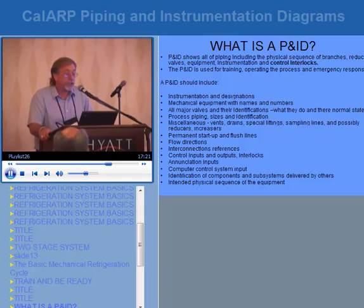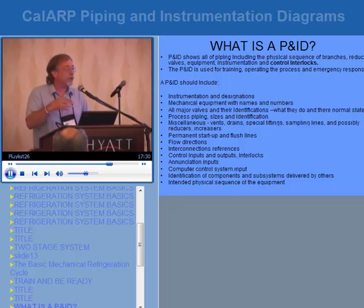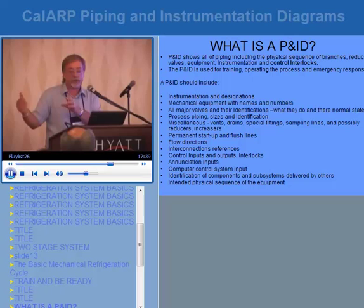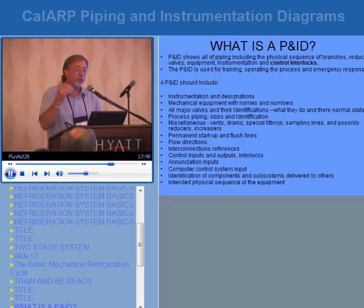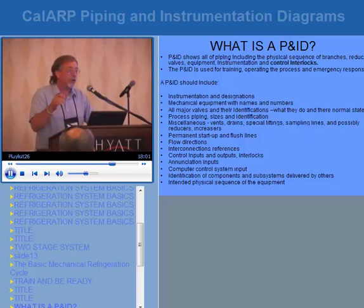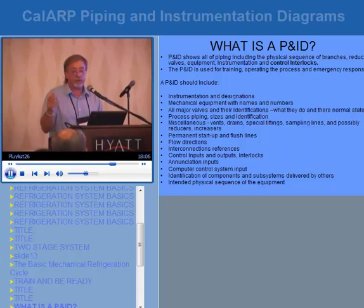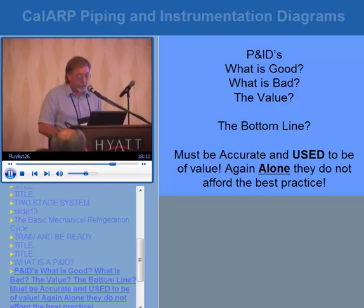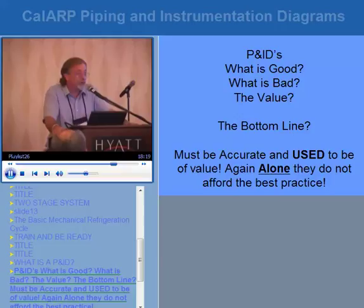Identification of components and subsystems delivered by others is also important — in this industry, some equipment is not permanently at the plant but portable and only interconnected seasonally. It may go from northern California to Yuma or Phoenix for a growing season and come back. If you want to see the whole system, go during the growing season. P&IDs must be accurate and they have to actually be used during training. Alone they don't afford the best practice for safety, but they are a very valuable part.